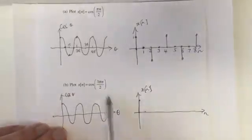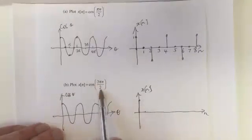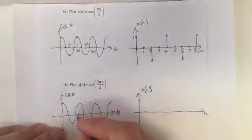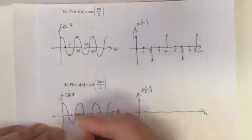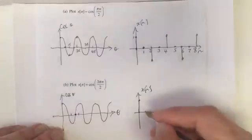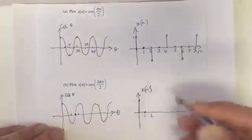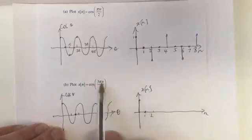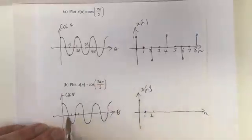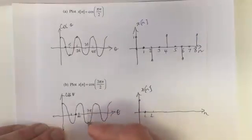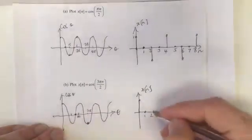What about n equals 1? We've got cos(3π/2). Where's cos(3π/2)? This is cos(π), and so this is cos(3π/2), and that's 0. So what about at 2? If n equals 2, we've got cos(3π). Where's cos(3π)? This is 2π, this is 3π. So it's there, at value minus 1.